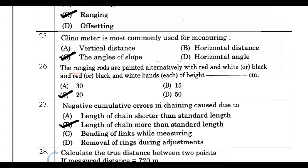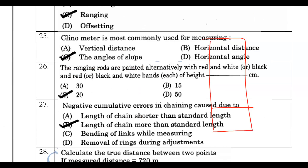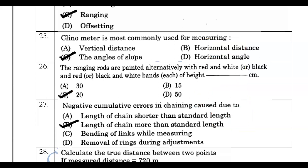The ranging rod is painted alternately with red and white bands. Each color band on the ranging rod has a height of 20 centimeters. The distance between alternating color bands is also 20 centimeters.